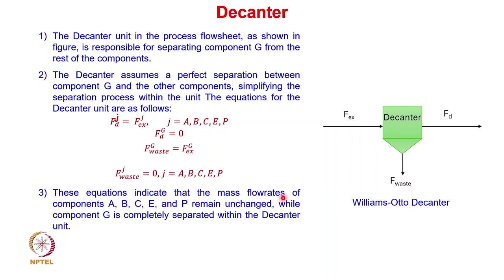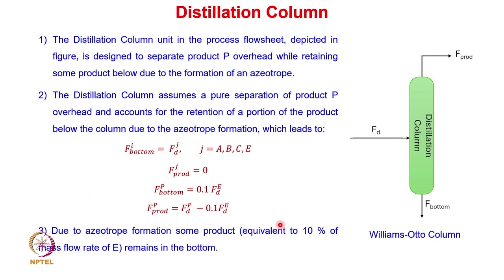These equations indicate that the mass flow rates of components A, B, C, E, and P remain unchanged, while component G is completely separated within the decanter. The last unit is the distillation column, designated to separate product P as the overhead product. Some amount of P remains in the bottom due to azeotrope formation, which the distillation column model accounts for.